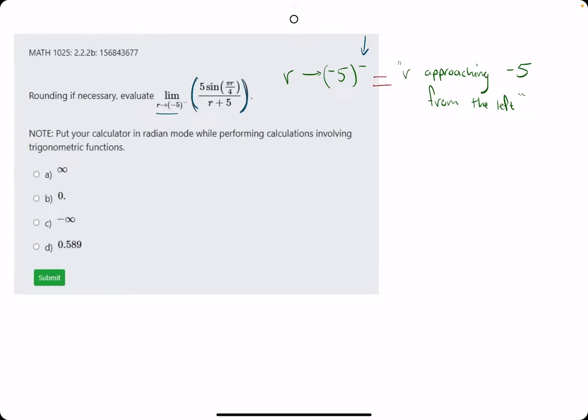That's what that little minus sign there means. The general approach is to plug in negative 5 wherever we see r. When we do that, we get 5 sine of negative 5 times pi over 4, all over negative 5 plus 5. As you can probably see, negative 5 plus 5 on the bottom gives us some sort of 0.